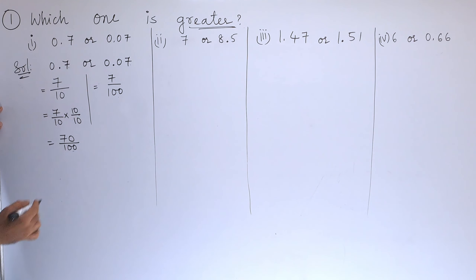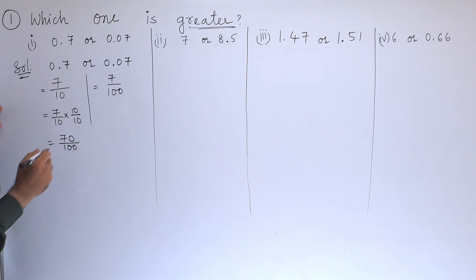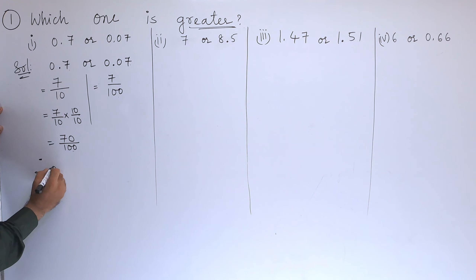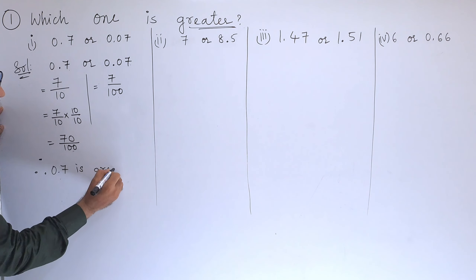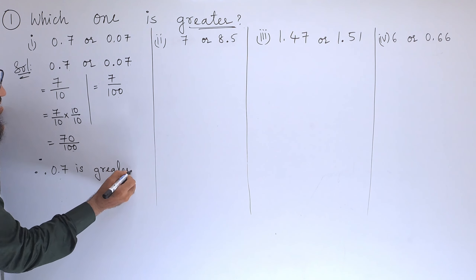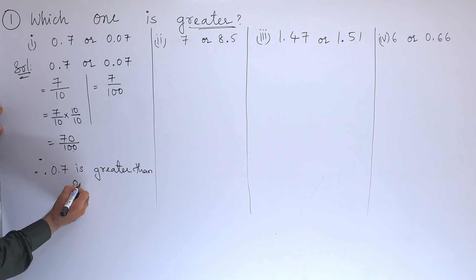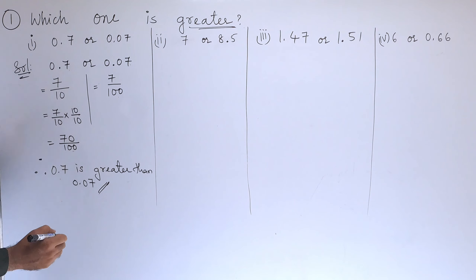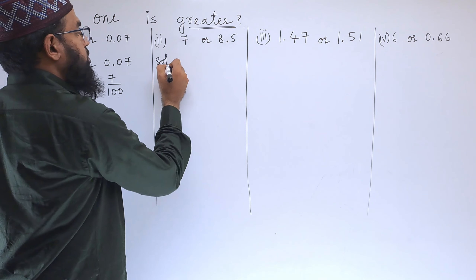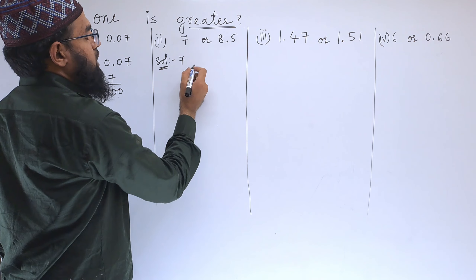Since the denominators are equal but the numerator is greater — 70 is greater than 7 — we can say that 0.7 is greater than 0.07. Therefore, 0.7 is greater than 0.07.